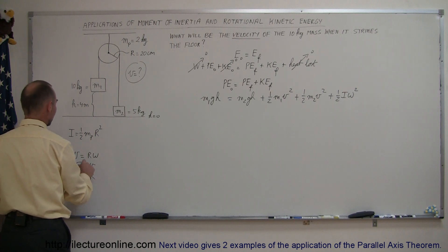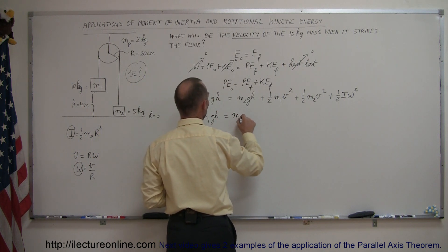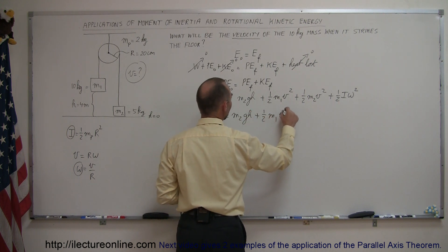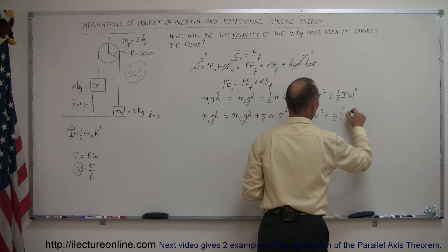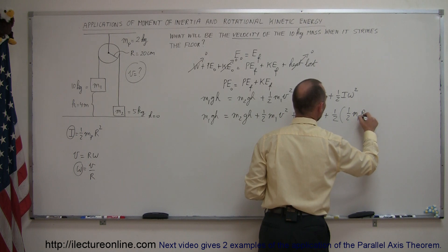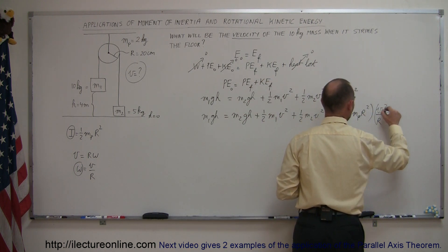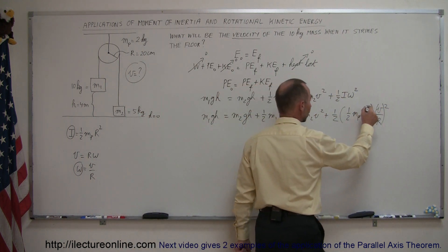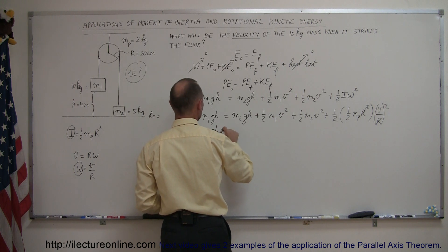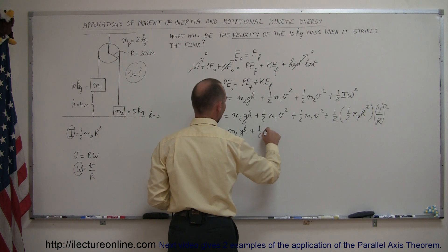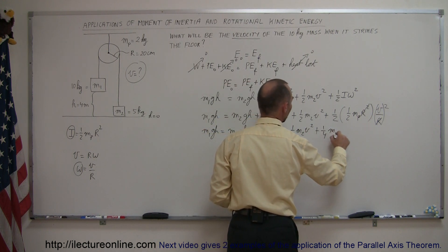So, replacing omega by v over r and replacing I by one-half mp r squared, this equation now becomes: m1gh equals m2gh, plus one-half m1v squared, plus one-half m2v squared, plus one-half times one-half mass of the pulley times the radius of the pulley squared, times omega squared which is v squared over r squared. Right away, we can see that r squared cancels out. Simplifying, we get m1gh equals m2gh, plus one-half m1v squared, plus one-half m2v squared, plus one-quarter the mass of the pulley times v squared.